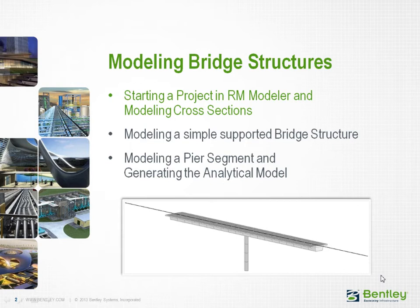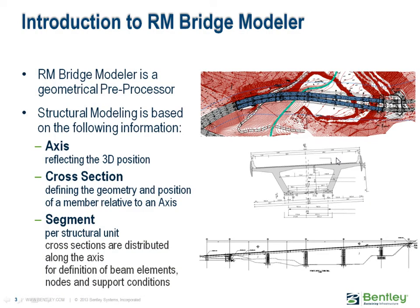At the end of this course you should be able to model bridge structures based on axis, cross-section and segment definition. RM Bridge Modeler is a geometric pre-processor for modeling of bridge structures. The main components for the modeling are axis, cross-section and segment. Usually a bridge project is related to a road or rail project. Consequently, the alignment of such a project in RM Bridge Modeler is input as an axis and defines the first direction of the structural model. The other two directions are defined by the so-called cross-section, which not only defines the cross-section of a beam but also its position relative to the axis. And finally the segment is the tool where all this information is put together to get the structural model.